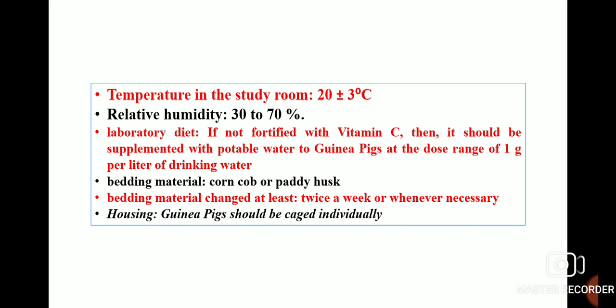The housing conditions required for keeping guinea pigs in GLP laboratories or in an animal house are as follows: the temperature in the study room should be 20 ± 3°C and relative humidity should be between 30 to 70%. If the laboratory diet is not certified with vitamin C, it should be supplemented with potable water at a dose of 1 gram per litre of drinking water. Bedding material used may be corn cob or pedi husk and should be changed at least twice a week or whenever necessary.